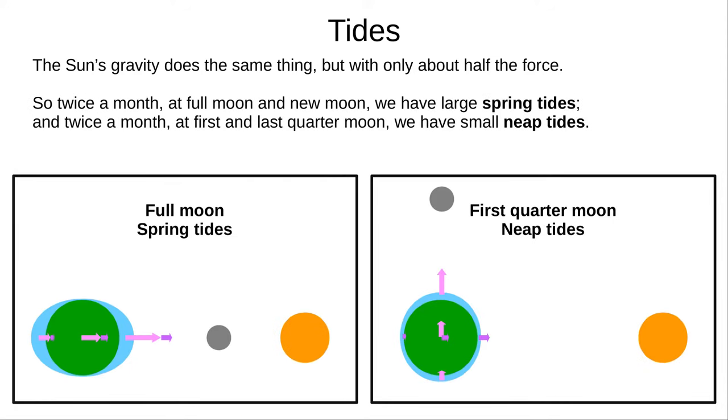So we have large spring tides twice a month, at full and new Moon, and small neap tides, at first and last quarter Moon.